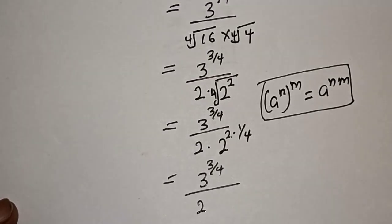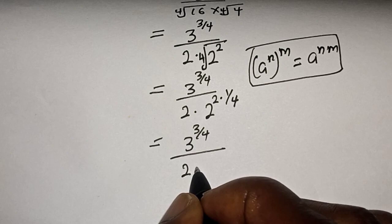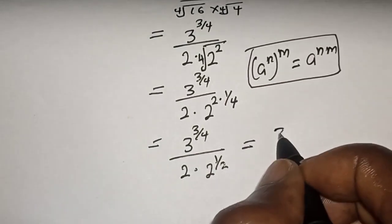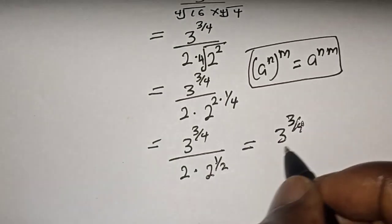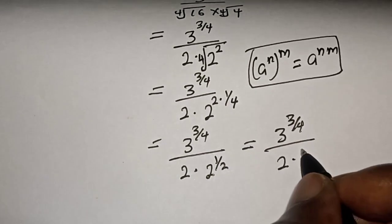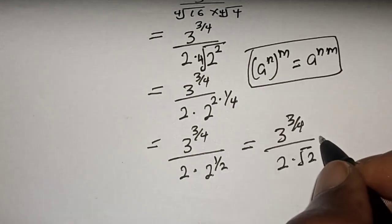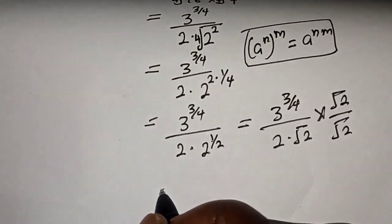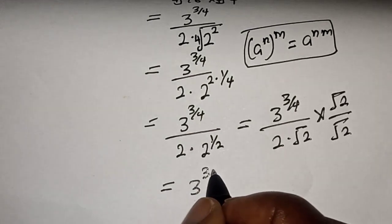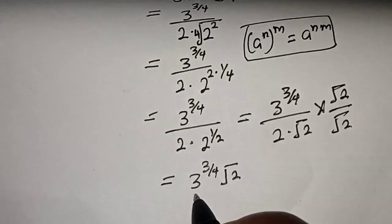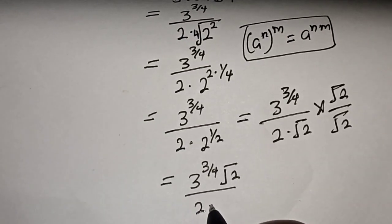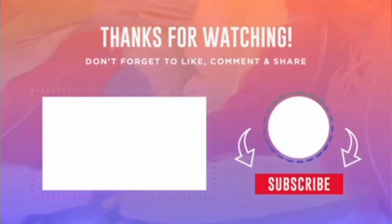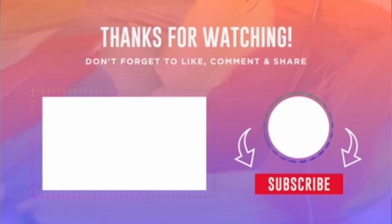This becomes 3 raised to power 3 over 4, over 2 multiplied by 2 raised to power 1 over 2. This equals 3 raised to power 3 over 4 times the square root of 2, over 2, over 2. The final answer is 3 raised to power 3 over 4 times the square root of 2, over 2 times the square root of 2. If you enjoyed the class, please don't forget to like, share, comment, and subscribe. Thank you.